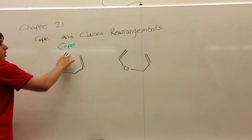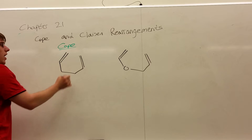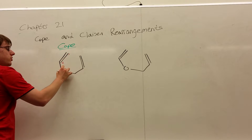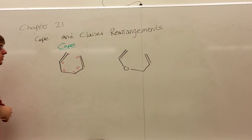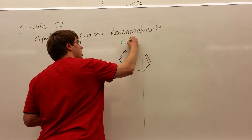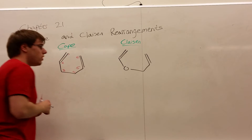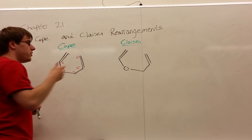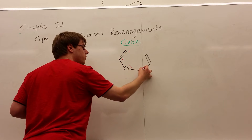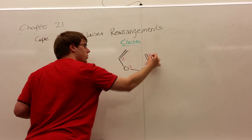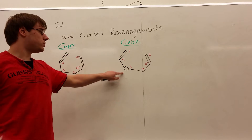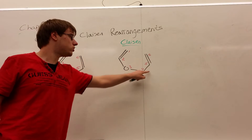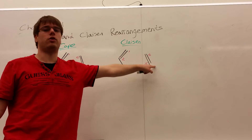The Cope rearrangement's reactant will just be a carbon chain with two double bonds in it, and those double bonds, if you count, will be on a chain of six carbons in length, such that the double bonds are between one and two, and five and six. The reactant of the Claisen rearrangement looks very similar, only while we still have double bonds between one and two and five and six, we also have an oxygen on either three or four. You can always check that the oxygen should always be a single bond away from one double bond and two single bonds away from the other.